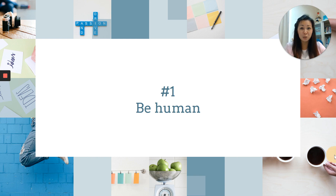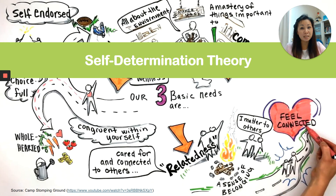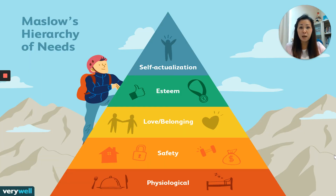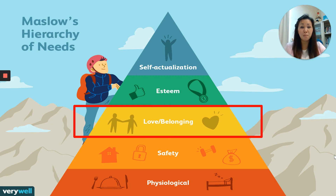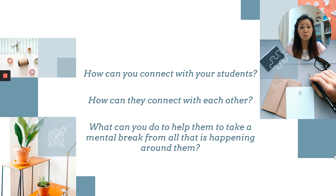One of our basic needs as humans is to connect. Based on the self-determination theory, this is about relatedness — about how we care for and connect with each other. It's about how to make your students feel that they matter in your classroom. If you look at Maslow's hierarchy of needs, you will also find connectedness and relatedness in love and belonging at tier three. So I thought about how I can connect with my students, how I can make them feel connected with each other, and what I can do to make them take a mental break from whatever is happening around them.